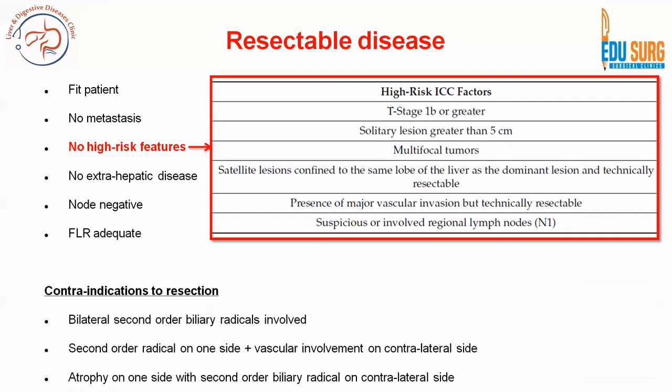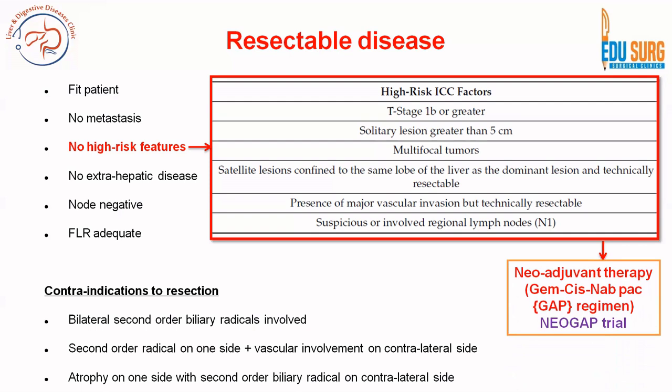When we talk of high-risk intrahepatic cholangiocarcinoma features, these are the patients who will benefit from neoadjuvant therapy, and that is why studies are now trying to identify these high-risk features: multifocal tumour, satellite lesions in the same lobe of the liver which is technically resectable, solitary lesion greater than 5 cm (stage T1B or greater), major vascular invasion which is technically resectable, and nodal metastasis. Based on the NeoGAAP trial, these are the cases where neoadjuvant therapy with the GAP regimen — gemcitabine, cisplatin, and nab-paclitaxel — may help these patients.